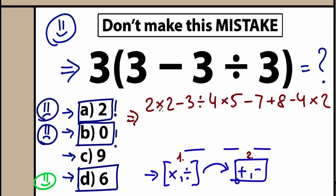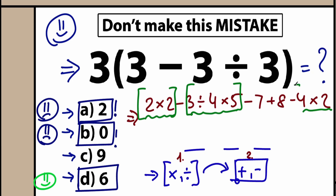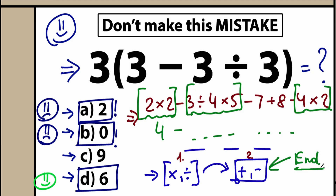Here's a quick example: 2 times 2 minus 3 divided by 4 times 5 minus 7 plus 8 minus 4 times 2. Whenever we have a mixture like this, the first thing is to put imaginary brackets around the multiplication and division parts. So we multiply 2 times 2, then solve 3 divided by 4 times 5, and so on. Addition and subtraction come last — step by step we evaluate the multiplication and division expressions first, and then do addition and subtraction at the end.